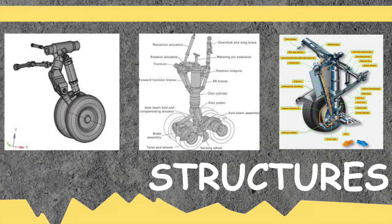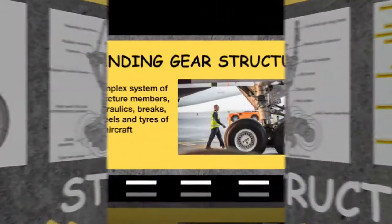The landing gear structure is a complex system consisting of structural members, hydraulics, energy absorption components, brakes, wheels, and tires. Additional components attached to and functioning with the landing gear may include steering devices and retracting mechanisms.